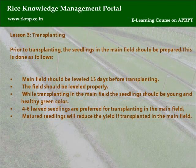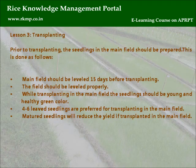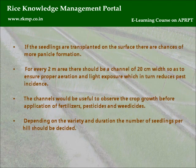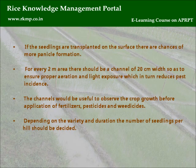Lesson 3: Transplanting. Prior to transplanting, the main field should be prepared. The main field should be leveled 15 days before transplanting. While transplanting in the main field, seedlings should be young, healthy, and green — 4 to 6 leaved seedlings are preferred. Matured seedlings will reduce the yield if transplanted in the main field. If seedlings are transplanted on the surface, there are chances of more panicle formation.